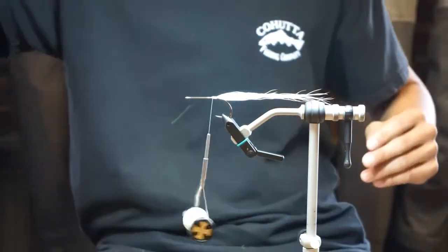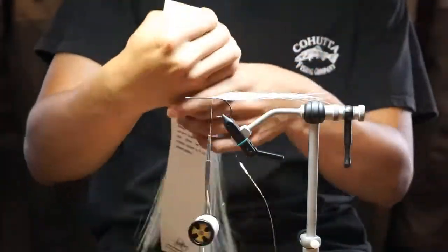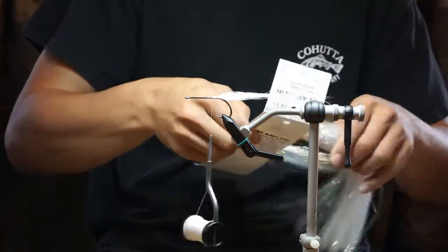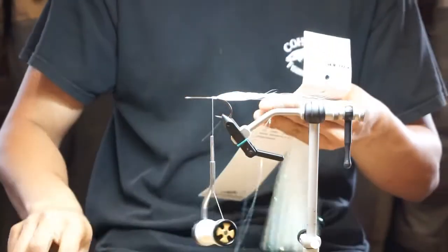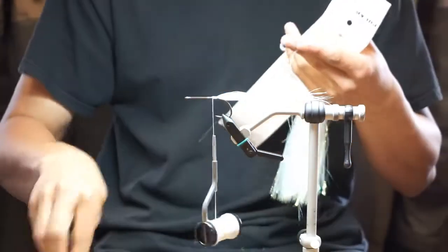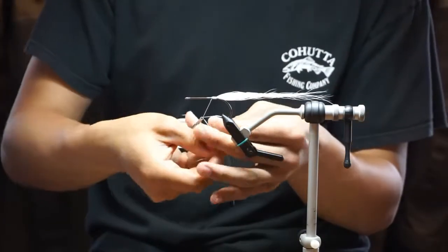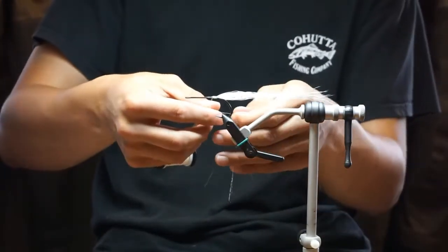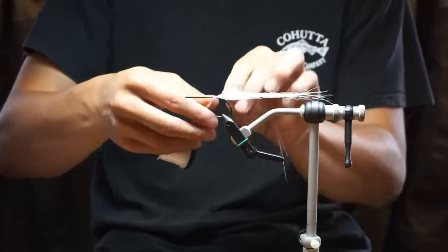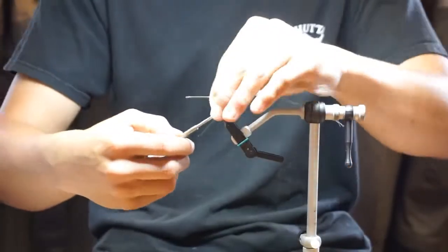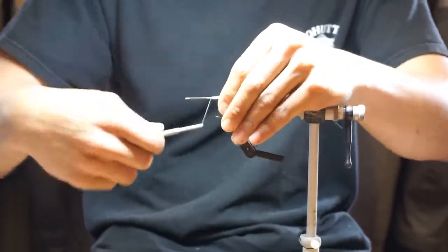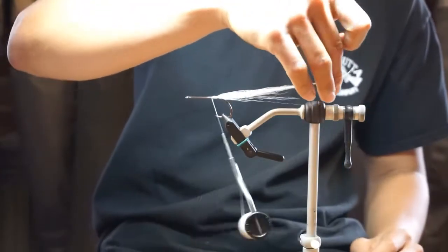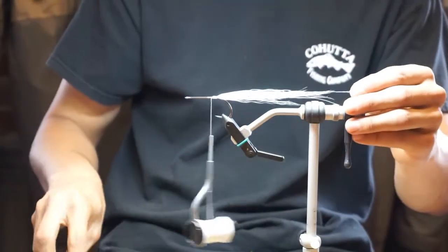I'm using polar flash opal. You can use pearl or opal flashaboo too. Tie that in 60-40. If you don't have really long bucktail, you can also set your tail length with your flash if you want to. As you can see, I tied it in a little bit long.